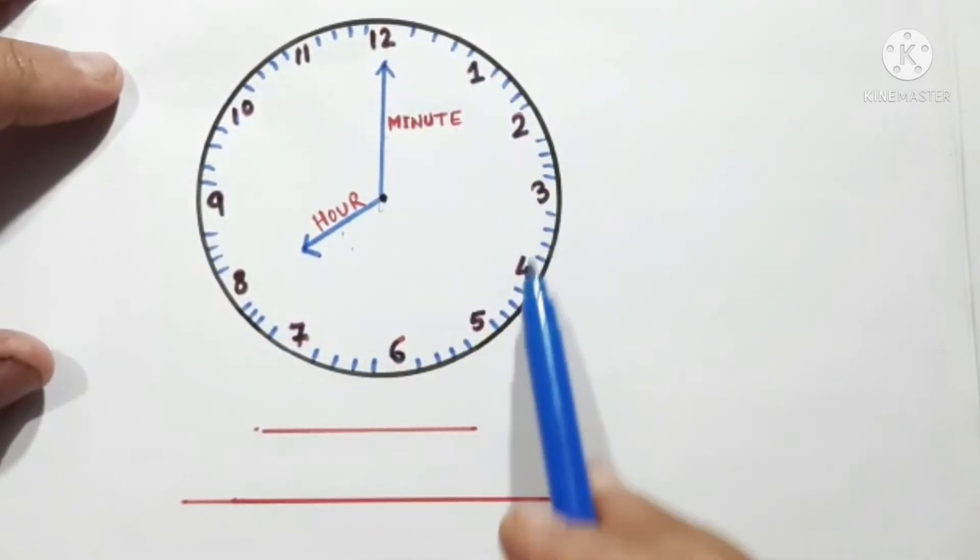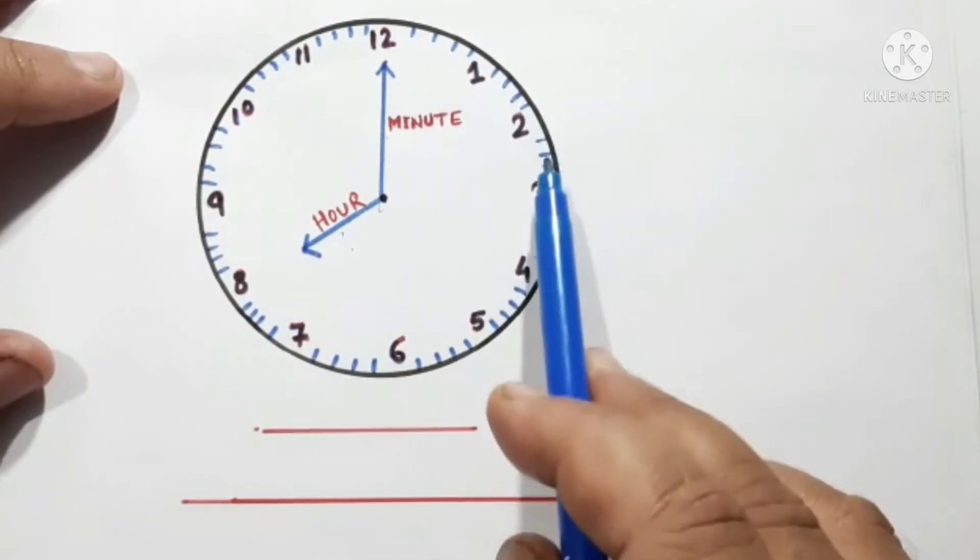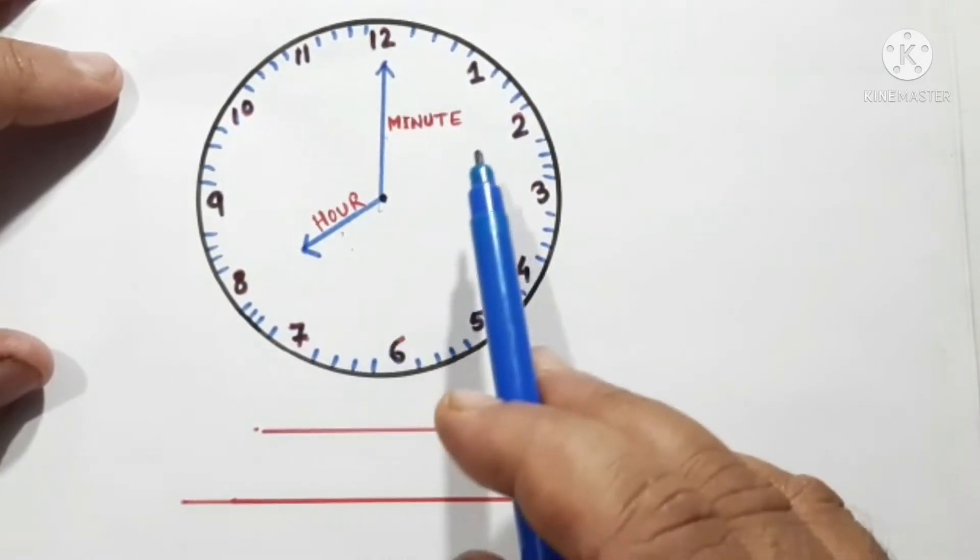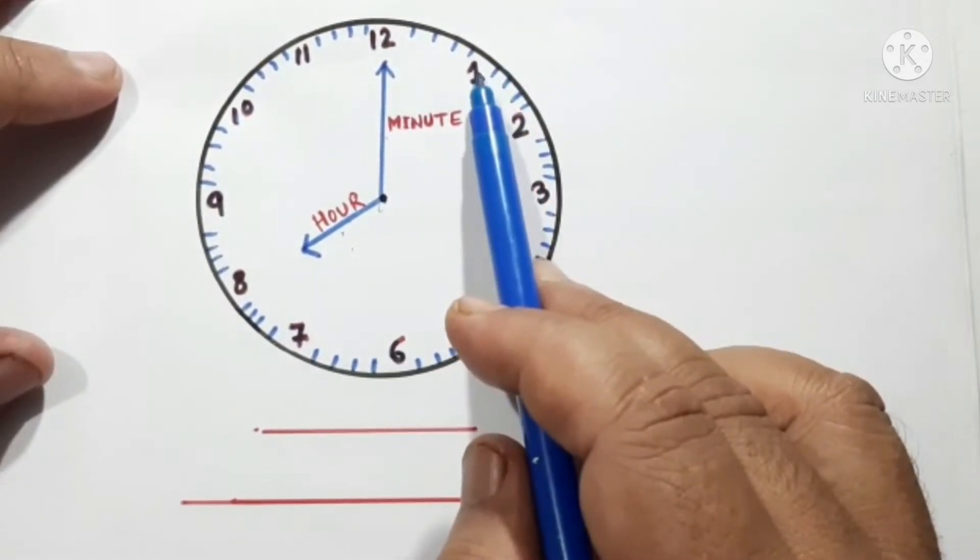And this clock has been divided into 12 parts. So each number represents 5 minutes.